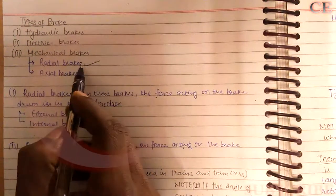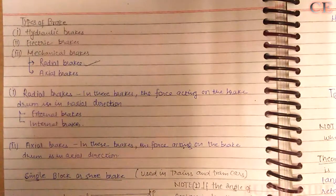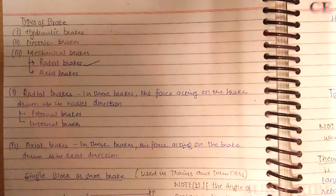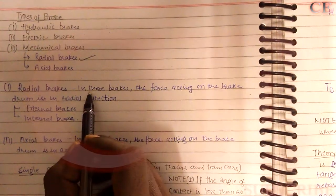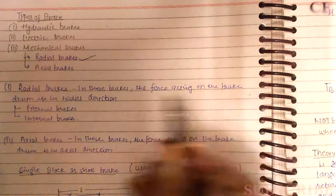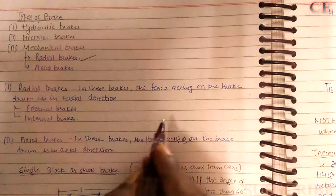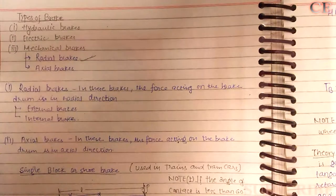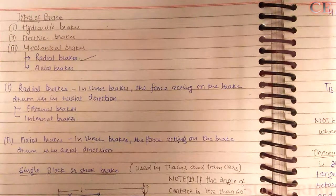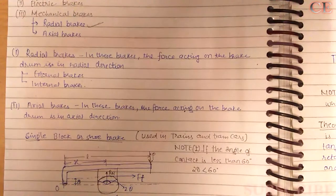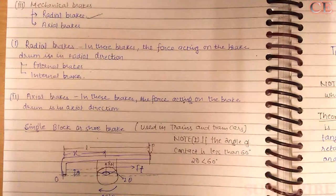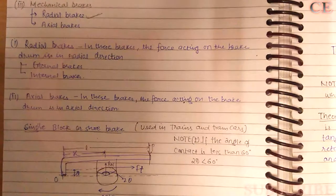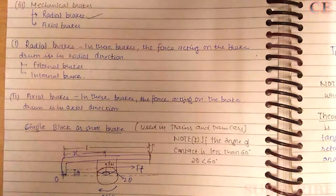We'll discuss radial brakes only, because they are widely used in bikes and different vehicles. In radial brakes, the force acting on the brake drum is in the radial direction — that is, in the direction of the radius. For axial brakes, the force acts along the axis, which is why they are called axial brakes.